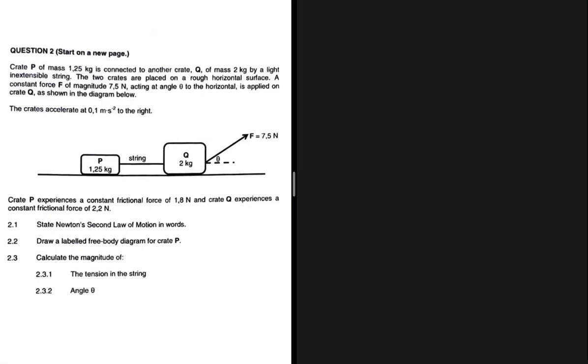The sketch demonstrates that, and the crates accelerate at 0.1 meters per second squared to the right. Crate P experiences a constant frictional force of 1.8 newtons and crate Q experiences a constant frictional force of 2.2 newtons. The first question 2.1 states Newton's second law of motion in words - I'm definitely not going to do that.